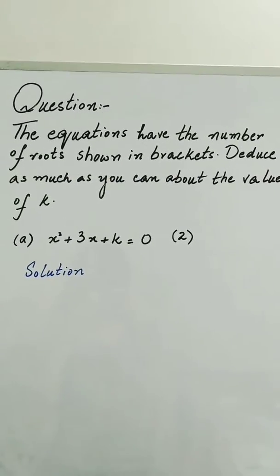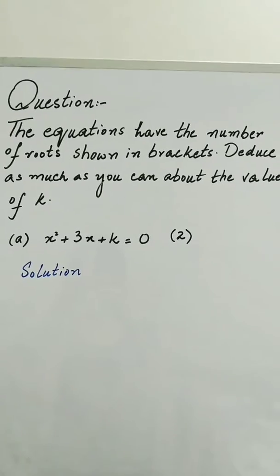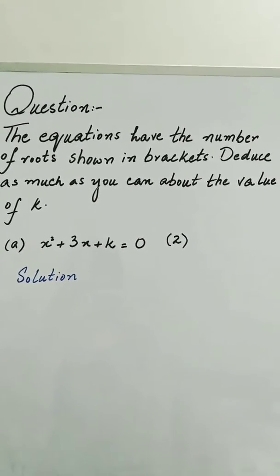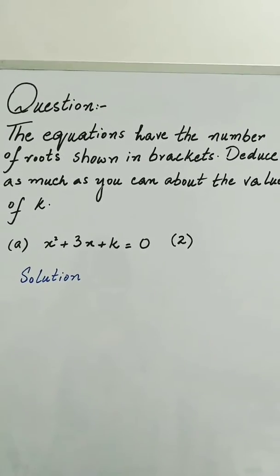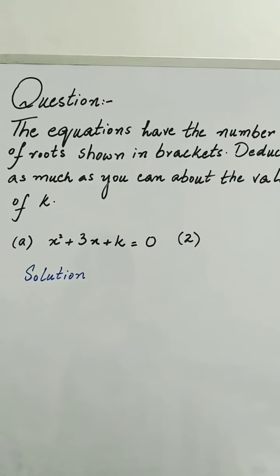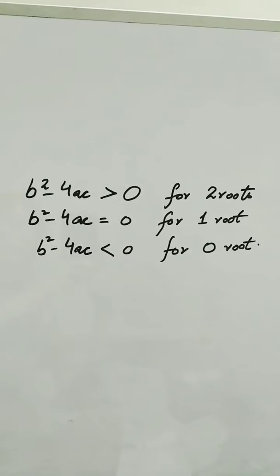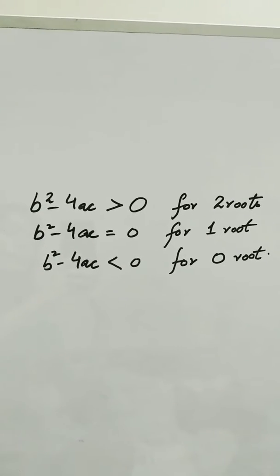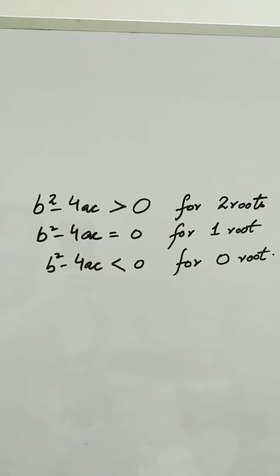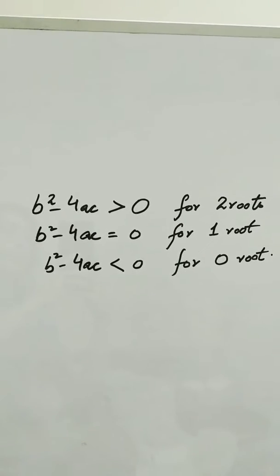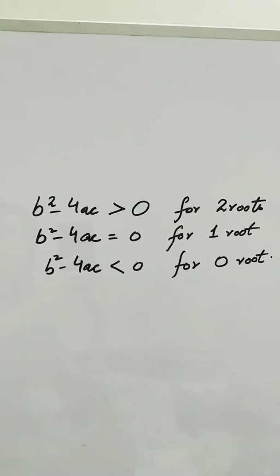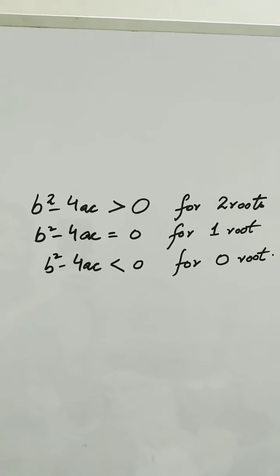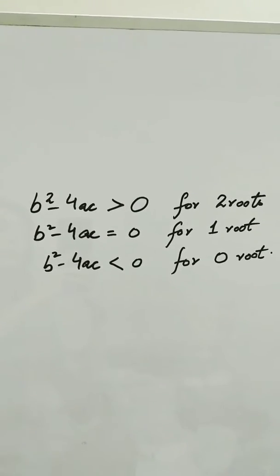Now look at another type of question in which we are given the number of roots. First we need to review a concept: if b squared minus 4ac is greater than 0, we have 2 roots; if b squared minus 4ac equals 0, we have 1 root; and if b squared minus 4ac is less than 0, we have no roots.